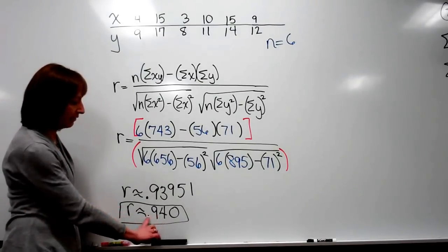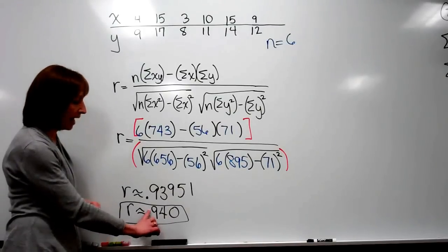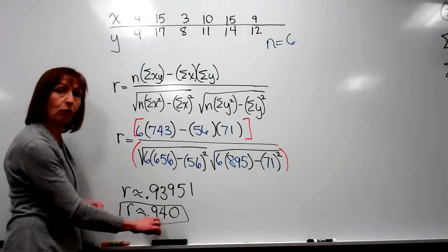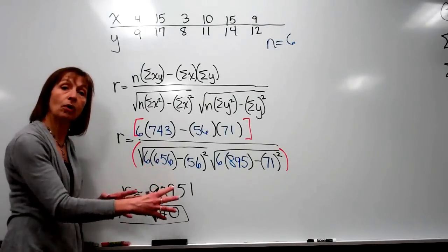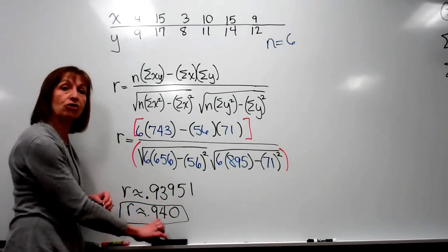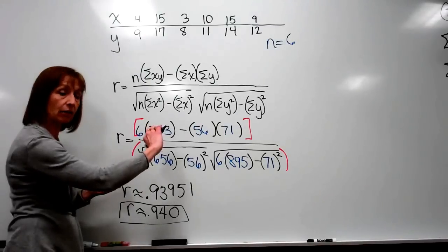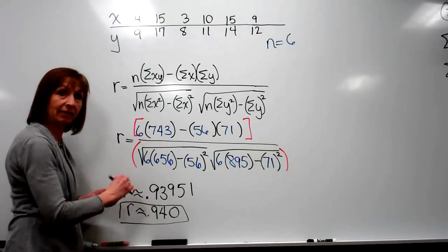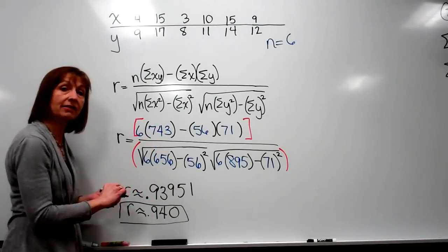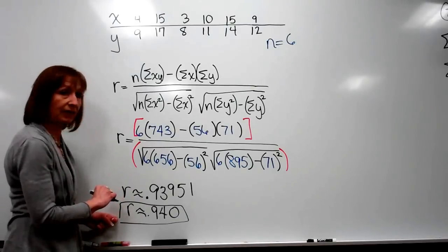Also, when we're looking at this value, notice we got an r that was a positive number, and .94 is relatively close to 1. So that is a very strong, the dots will be tightly knit along the line, and it's positive, so a very strong positive linear correlation between these variables.